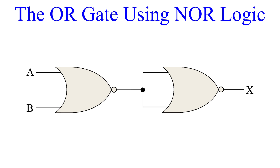Now we're going to look at the OR gate using NOR logic. This is a very simple circuit requiring only two NOR gates. You should recognize the logic here, since it is reminiscent of the AND gate using NAND logic. Since OR is the negation of a NOR gate and vice versa, we need only tack an inverter onto the end of the initial NOR gate. So this one is also extremely intuitive — a NOR gate and an inverter, which flips a NOR output to that of an OR output.